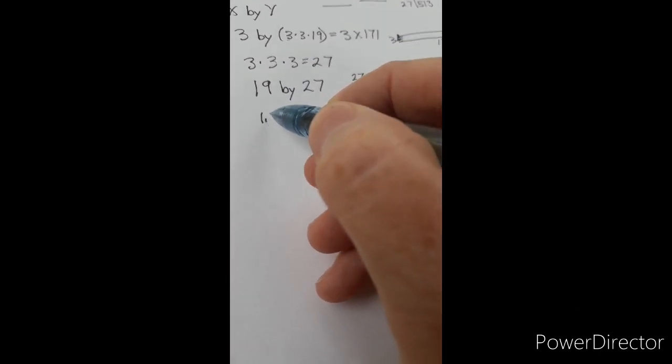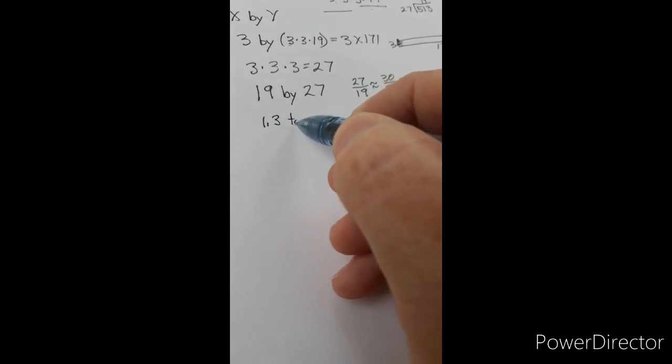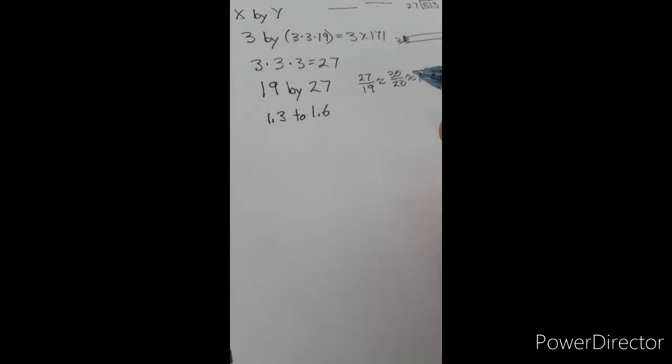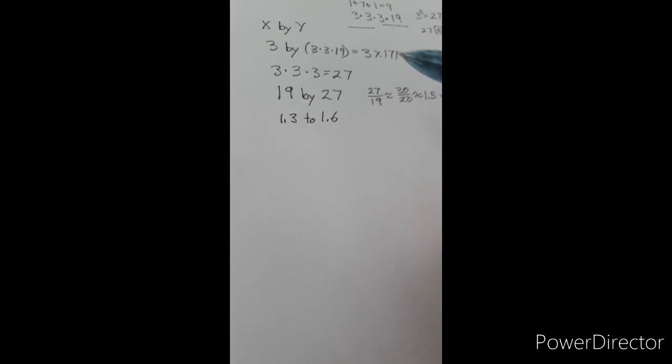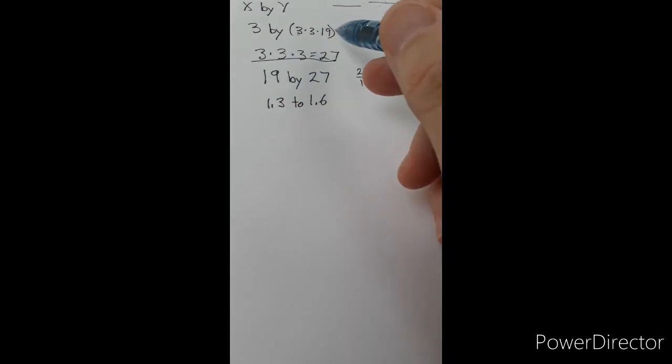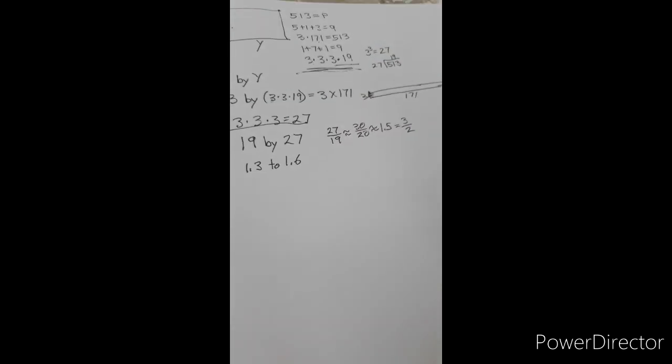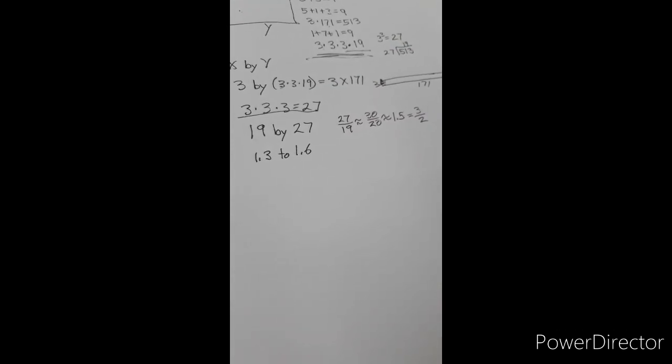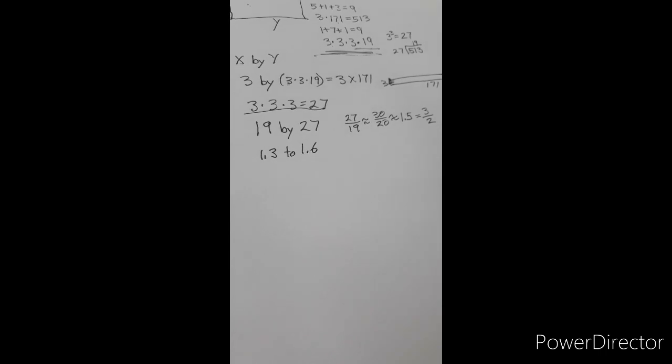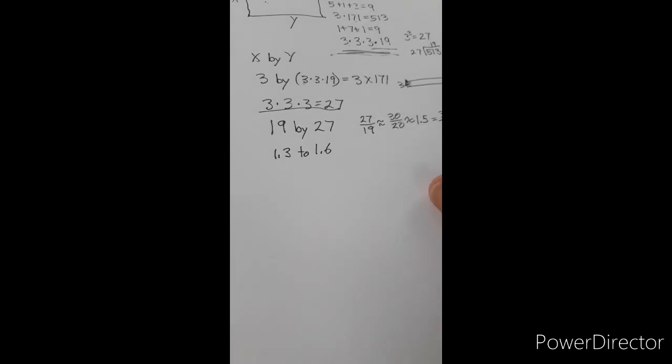That's the aspect ratios for puzzles. Aspect ratios tend to be in the 1.3 to 1.6 range. Find combinations among these factors that seem to come up with something that has a nice pleasing rectangular shape. So in fact, this is the correct size.